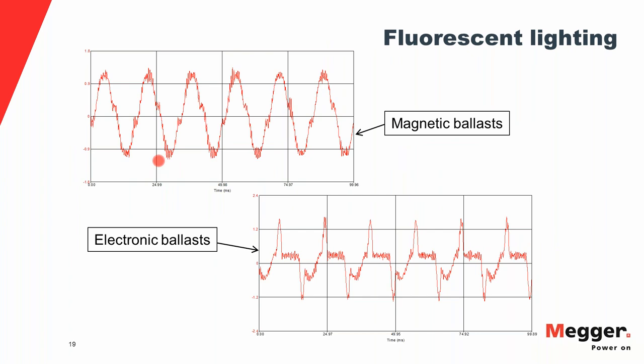Another harmonic source is fluorescent lighting. Fluorescent lights are discharge lamps: gas inside the lamp requires an initial high voltage to cause a discharge, after which current must be limited by a ballast. There are two types of ballast: magnetic ballast (using an iron-core transformer and capacitor) and electronic ballast (employing a switch mode power supply circuit with switching). The type of ballast has significant influence on current waveform distortion — there is much more distortion with electronic ballast.